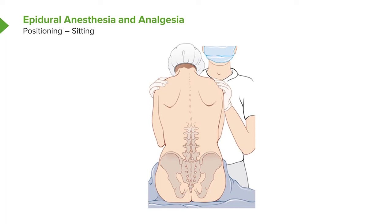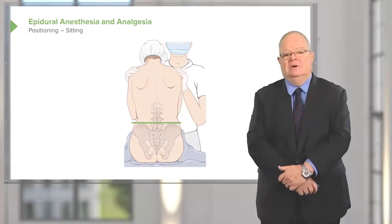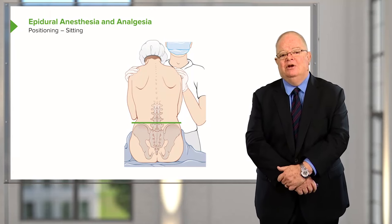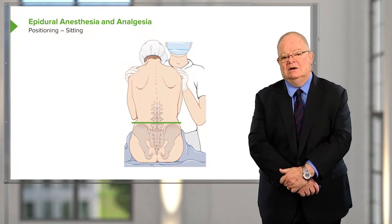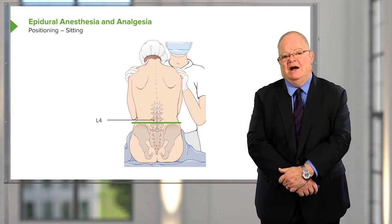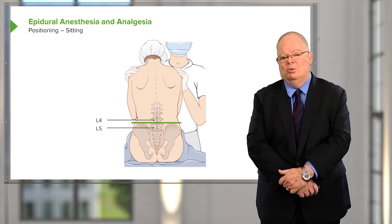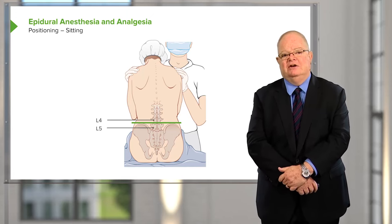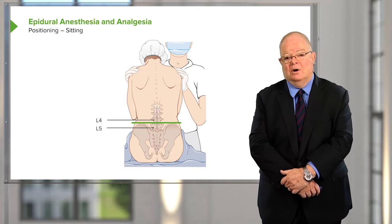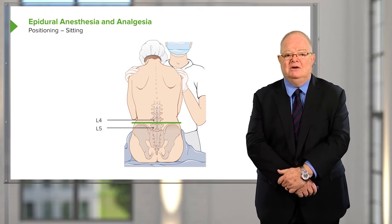The easiest way to place an epidural is with the patient in the sitting position because this straightens the spine. We draw a line between the superior spines of the pelvis — in theory that line goes through the dorsal spinous process of the L4 vertebra, though recent studies show it can vary by one to two vertebrae. We still use this technique to feel the landmarks in the back, specifically the dorsal spines of the lumbar vertebrae and the spaces between them.